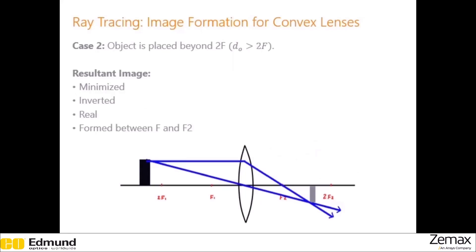Case two: the object is beyond two times the focal length of the lens. The image is minimized, so it's smaller than the original object. It's inverted — the object sticks up from the optical axis while the image sticks downward. It's a real image, so placing a screen on the image plane would show a projection. And it is formed between the focal point and two times the focal point on the opposite side of the lens.